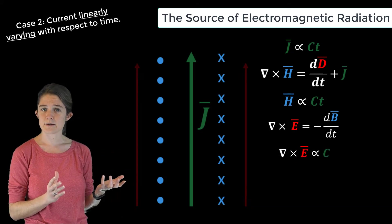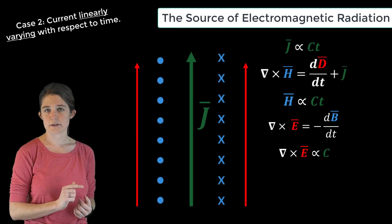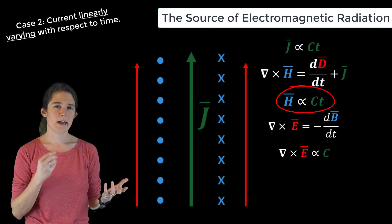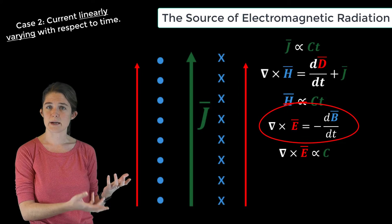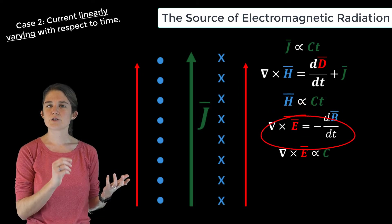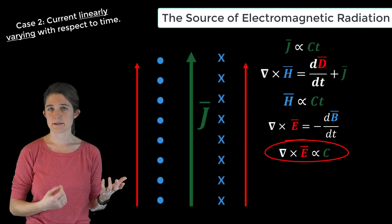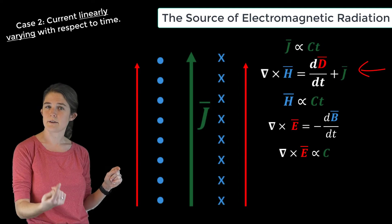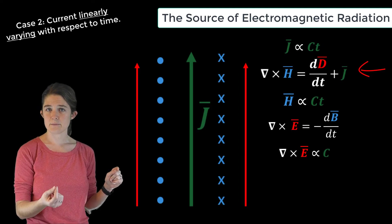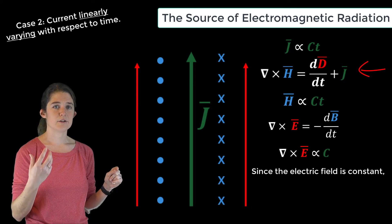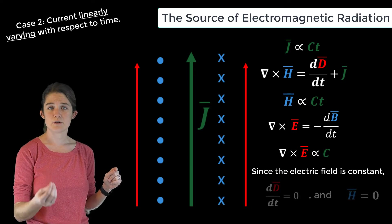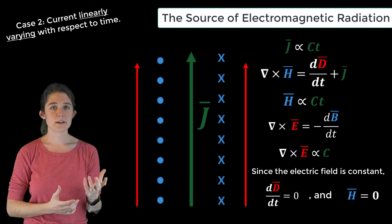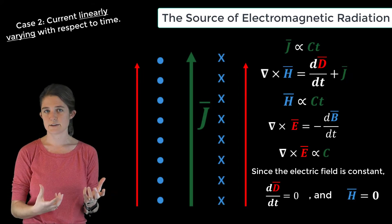This electric field will be perpendicular to the magnetic field, pointing in the same direction as the initial current. Because the magnetic field is linearly varying and the electric field is related to the derivative of the magnetic field, the electric field produced is constant with respect to time. By Ampere's law, for this electric field to produce a magnetic field of its own, it must have a nonzero time derivative. Since the electric field is constant, it produces no further magnetic field. So the total field solution here is a linearly varying magnetic field plus a static electric field.